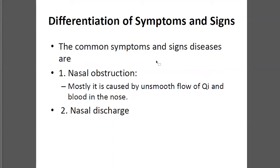Then we talk about symptoms and the signs of nose problems. Nose problems generally have two main symptoms, so they are relatively simple. The first is nose blocking — obstructive blocking — which blocks qi flow and blood flow. The second symptom is nose discharge.